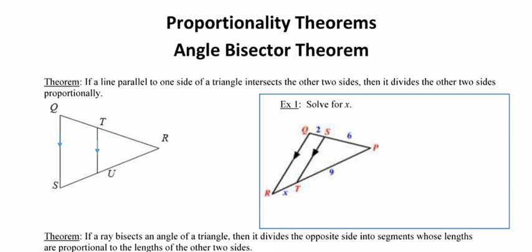In this video, we're going to take a look at some proportionality theorems that involve triangles. The first one says that when a line that is parallel to one side of a triangle intersects the other side, it's going to divide the other two sides up in such a way that they are in proportion.